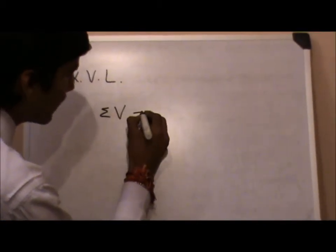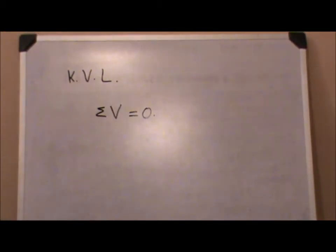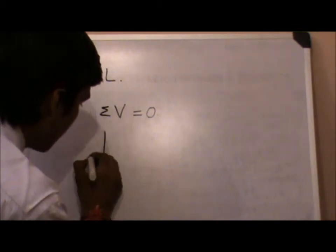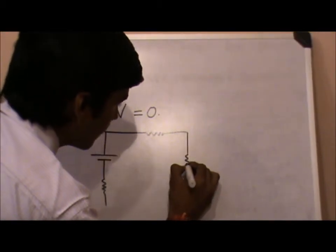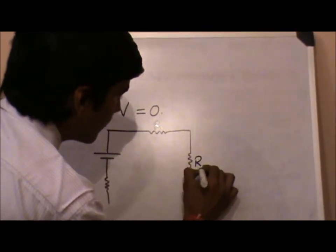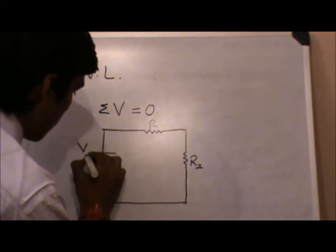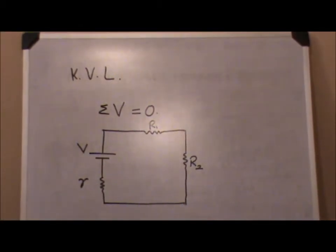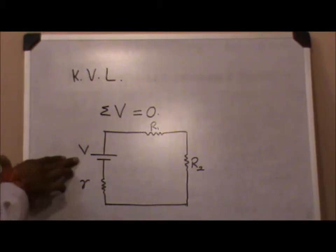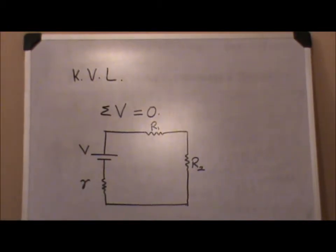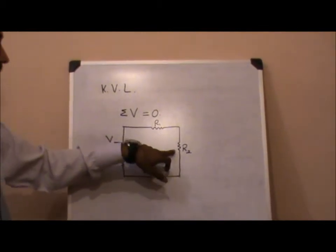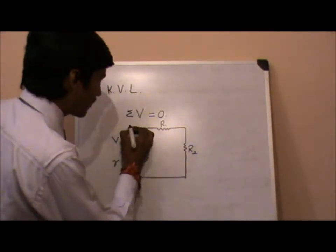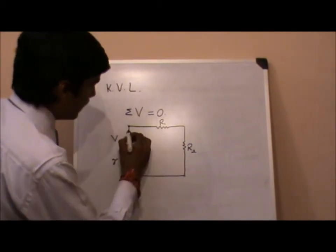Now considering a circuit with a battery with an internal resistance with R1, another resistance in series R2, another resistance in series. This will give a basic idea of what I've written on the board. V is the EMF or the potential difference of this battery, small r is the internal resistance of the battery, then R1 and R2 are the respective load resistances connected in series for this particular battery.